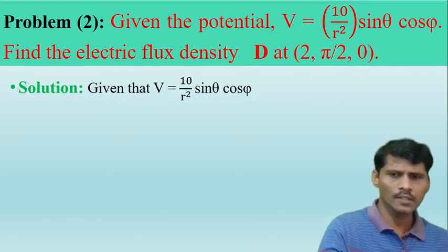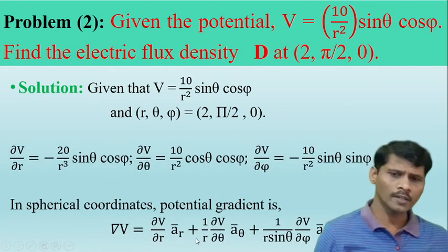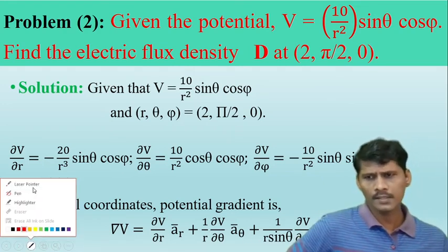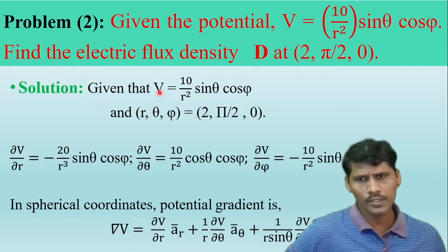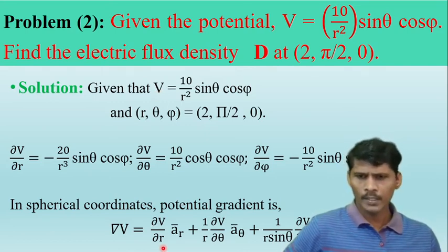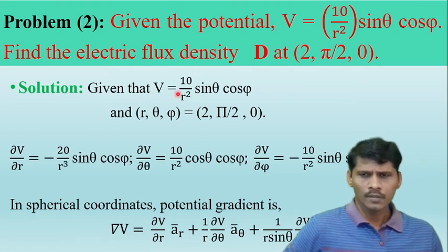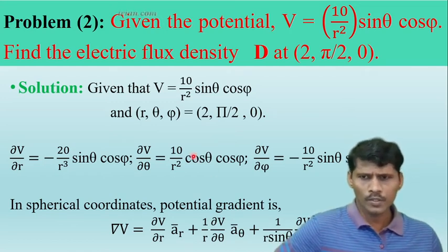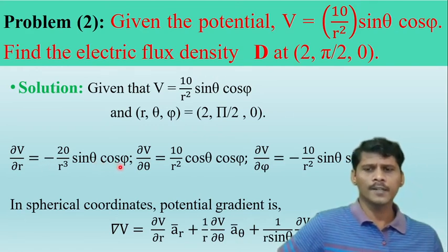In the spherical coordinate system, the gradient of the potential is: ∇V = (∂V/∂R)·aR + (1/R)·(∂V/∂θ)·aθ + (1/(R·sinθ))·(∂V/∂φ)·aφ. We need to differentiate the given potential V with respect to R, θ, and φ respectively. When differentiating with respect to R, the remaining variables θ and φ are held constant.